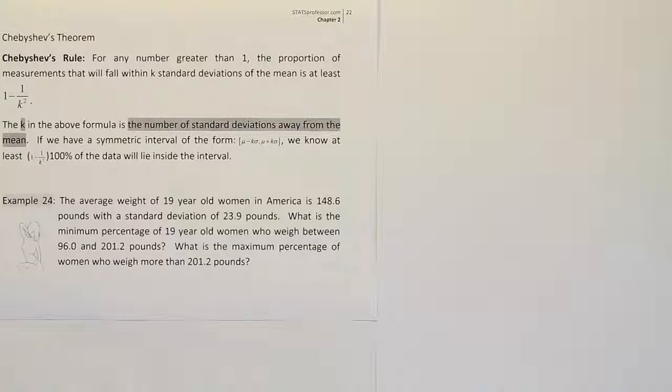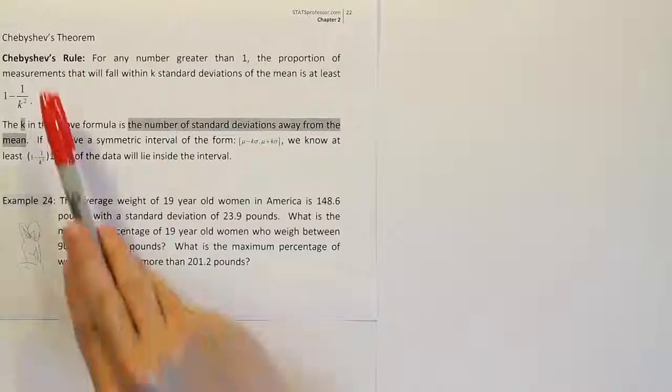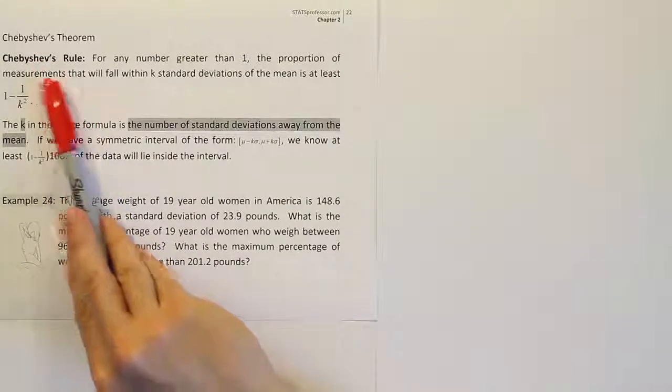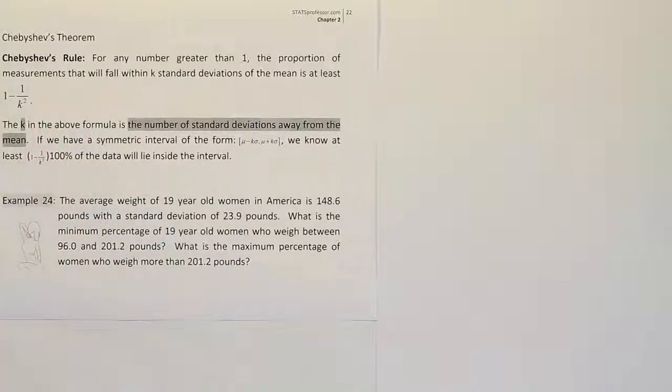So when I read this problem, the thing that jumps out at me first is this phrase, what is the minimum percentage? That's a phrase that's used in conjunction with Chebyshev's rule, because this formula or this rule gives you essentially the minimum percentage that will lie within an interval.